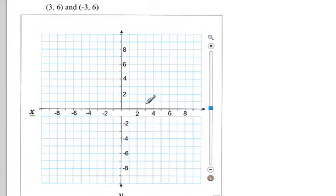The next two points are (3, 6) and (-3, 6). I'll put a point at 3 and 6, and then another point at negative 3 and 6. If we draw a line between those two points, we end up with a horizontal line.